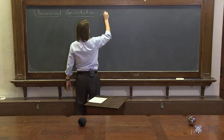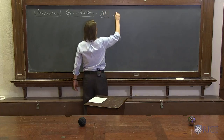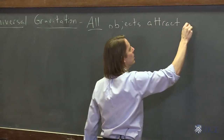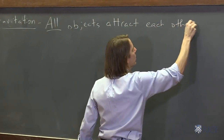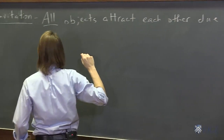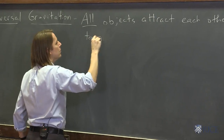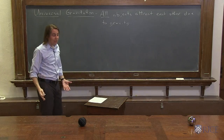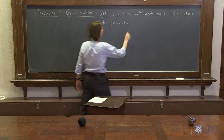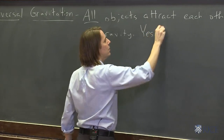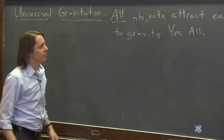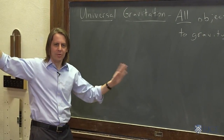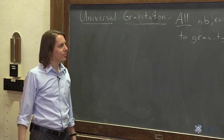What it basically says is that all objects attract each other due to gravity. And you may ask: really, all? And the answer is yes. Everything in the universe — even a proton in my thumb and something in the crab nebula somewhere. Very small force, but they all attract each other.